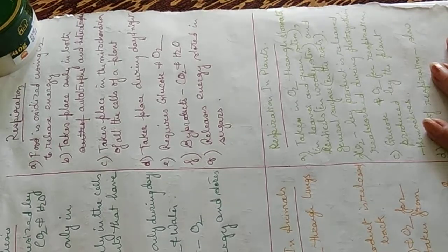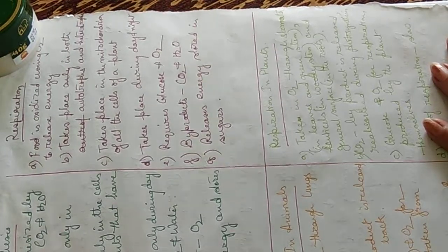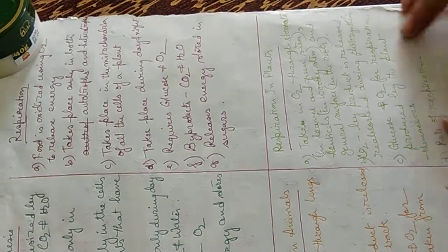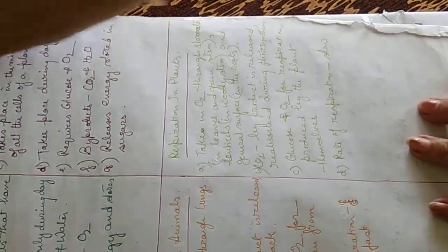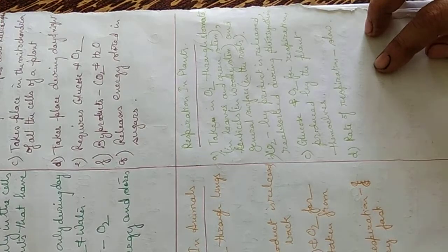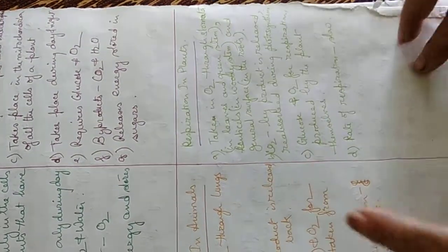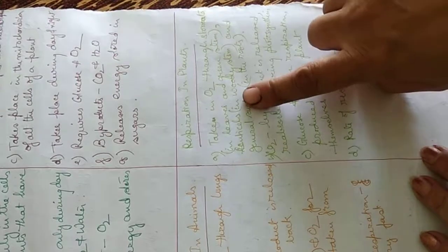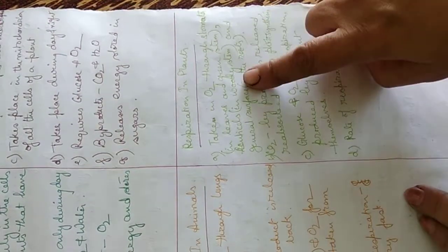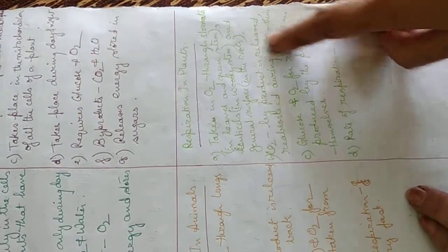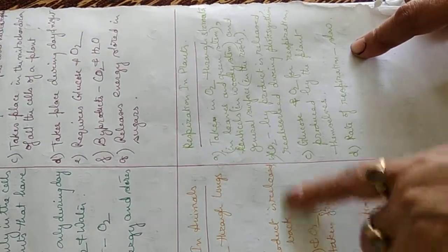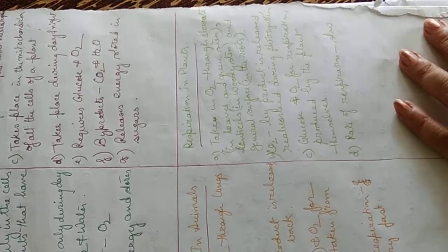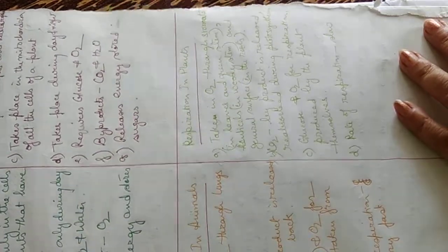Photosynthesis captures energy and stores it in sugars, whereas in respiration this sugar is broken down to release energy. In animals, oxygen is taken in through lungs; in plants, oxygen is taken in through stomata of leaves, green stems, lenticels in woody stems, and the general surface of roots. In animals, carbon dioxide is a byproduct and is released but not taken back; in plants, carbon dioxide released during respiration is reabsorbed during photosynthesis.